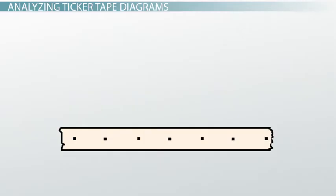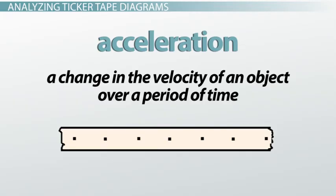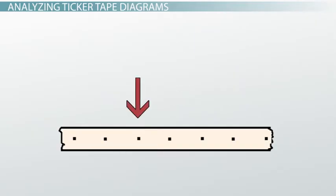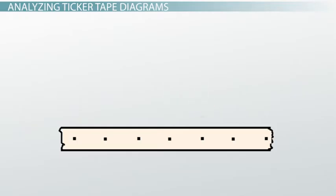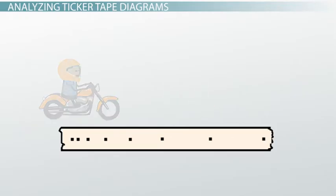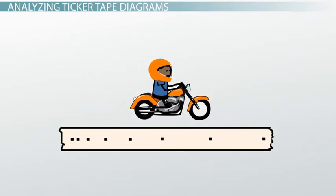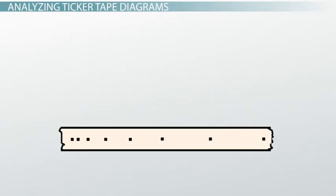But what about acceleration? An acceleration is a change in the velocity of an object over a period of time. So what does an acceleration look like on a ticker tape diagram? Well, if the speed is changing, the spacing of the dots must be changing. For example, you might get a ticker tape diagram that looks like this. This diagram would represent an object that was speeding up, because the dots are getting further and further apart.